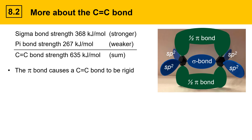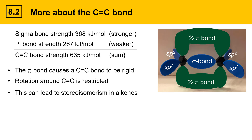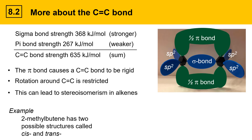The pi bond of the C=C bond is rigid — it doesn't allow for rotation. In order to rotate about an alkene you'd have to break the pi bond, which costs quite a bit of energy. So rotation about C=C double bonds is restricted. This can lead to stereoisomerism in alkenes — in other words, some alkenes can exist as stereoisomers.